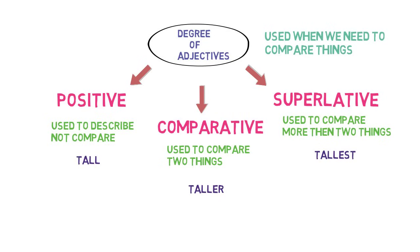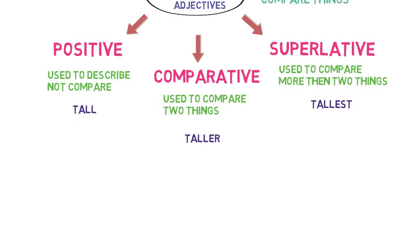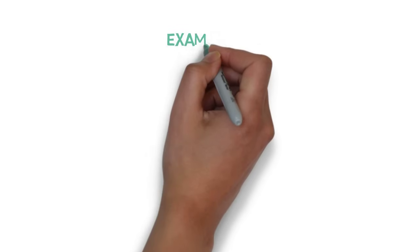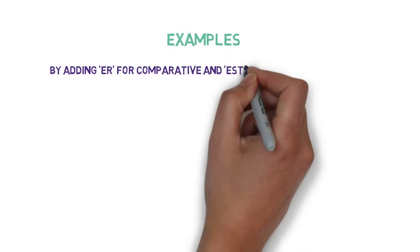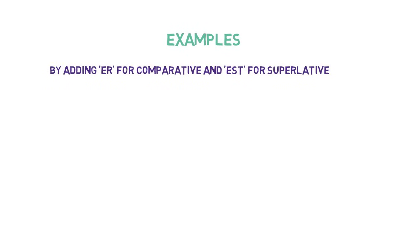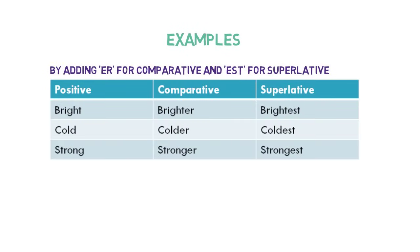Positive degrees can be converted to comparative and superlative degrees. One way is by adding ER for comparative and EST for superlative at the end of the positive degree. For example: Bright, Brighter, Brightest — Cold, Colder, Coldest — Strong, Stronger, Strongest. Note the ER and EST characters added at the end of the comparative and superlative degrees.